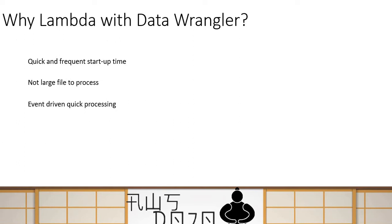People also use Lambda when they want to do event-driven quick processing — for example, data landing in an S3 bucket raises an event, calls the Lambda function, and does a quick transformation on the data. These are the reasons I have seen Lambda functions used for data transformation. Otherwise, people simply use Glue or EMR to build a data pipeline.